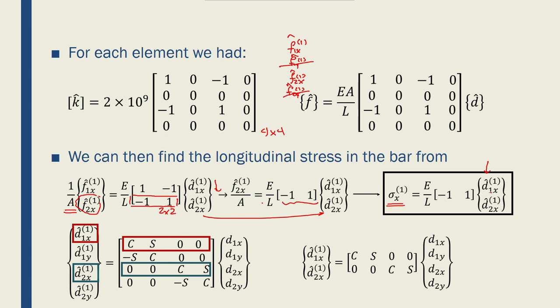However, I don't know the local nodal forces. Like I said, these are local nodal displacements, and I don't know them. So what I do is that I use the transformation matrix to find them. So d1x1, d1y1, d2x1, d2y1 are equal to this transformation matrix T multiplied by the global displacements that I found earlier.